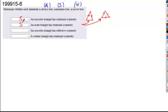And what about an isosceles triangle has reflective symmetry? No matter what, you'll be able to draw a line straight from the vertex to the base. It'll cut it into two pieces that mirror each other. So this is always true.